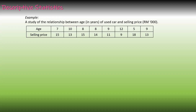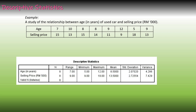First, look at the descriptive statistics output based on the example. Descriptive statistics means you can find the value of N, range, minimum, maximum, mean, standard deviation, and variance. Based on the example, the independent variable is H and the dependent variable is selling price. The number of data for this example is 8.